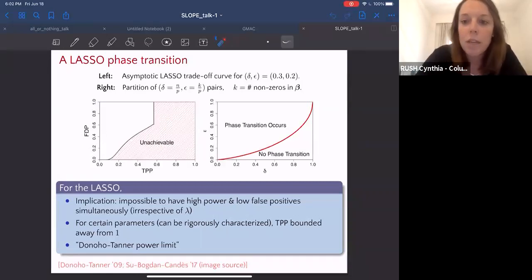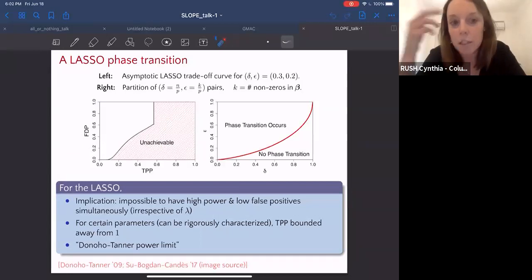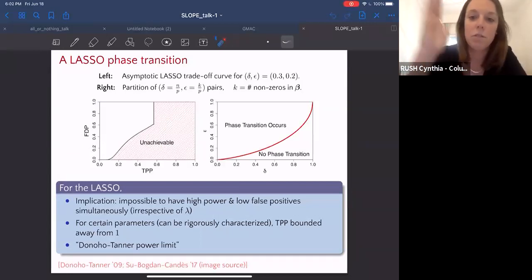This is sometimes referred to as a Donoho-Tanner or phase transition, and it's visible on the plot on the left by this kind of vertical line here. In the plot on the right, we just have the epsilon delta space where such a phase transition occurs. I'm going to refer to this largest achievable value of the TPP as the Donoho-Tanner or power limit or the DT power limit. In our plot, the DT power limit is something like 0.6 here.